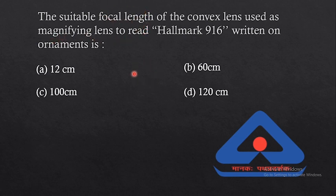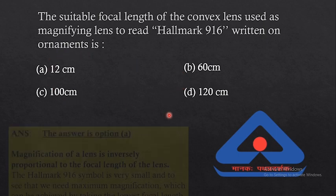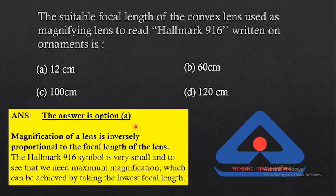The answer is option A. The magnification of a lens is inversely proportional to the focal length of the lens. This means that if you increase the focal length of the lens, the magnification will decrease because it is an inversely proportional relation.